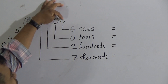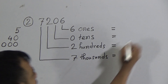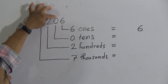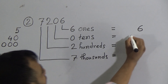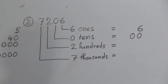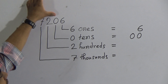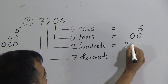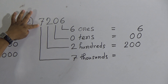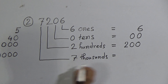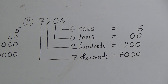Using the shortcut for 7206: after 6 there are no digits, so write 6 alone. After 0 (tens) there is one digit, so write 00 — zero with one zero. After 2 (hundreds) there are two digits, so write 200 — two with two zeros. After 7 (thousands) there are three digits, so write 7000 — seven with three zeros. That's the place value of 7206.